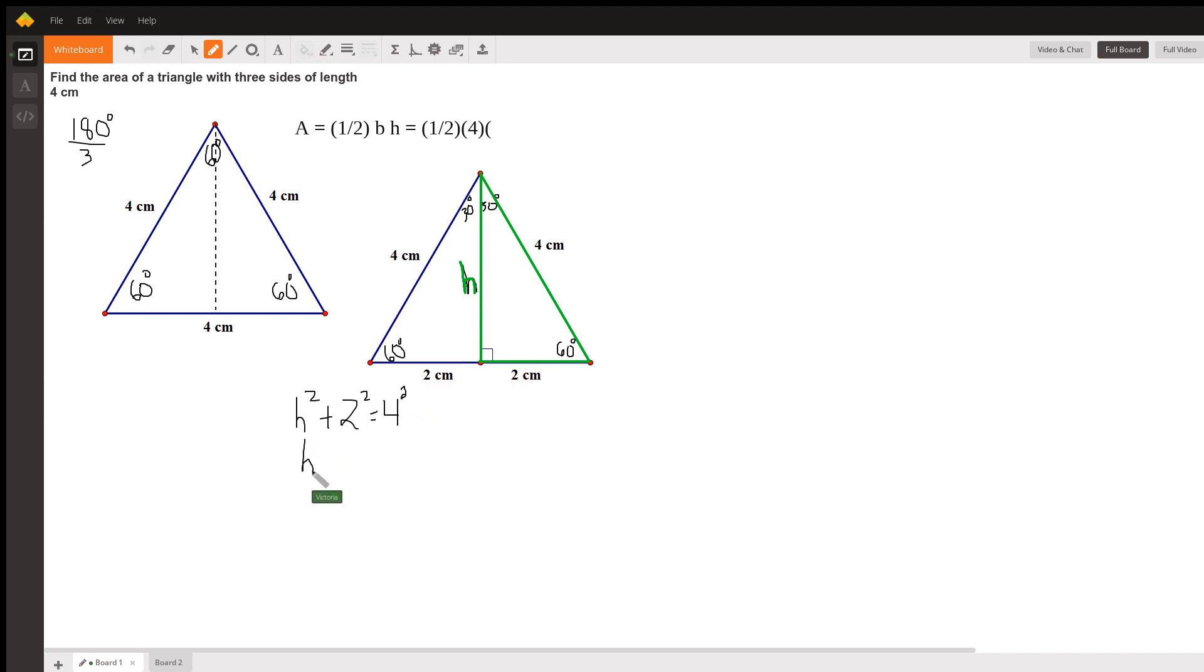So that means we have h squared plus 4 equals 16. If we subtract 4 from both sides, we find out that h squared is 12, and then take the square root, and find out that h equals 2 radical 3.